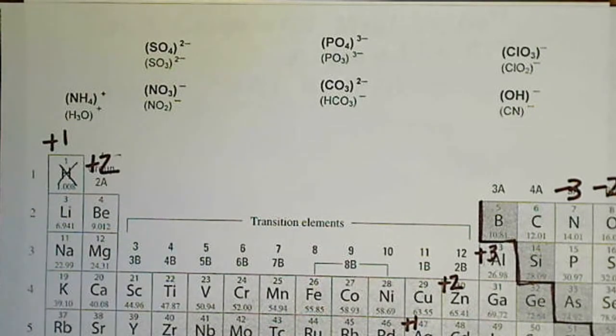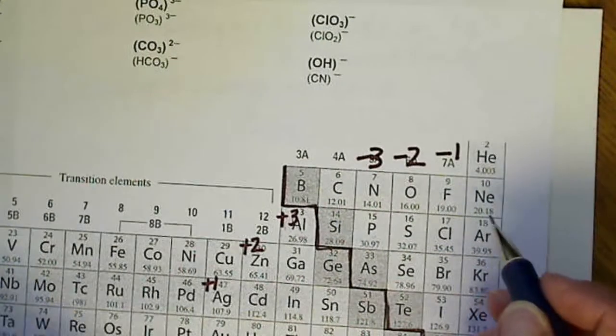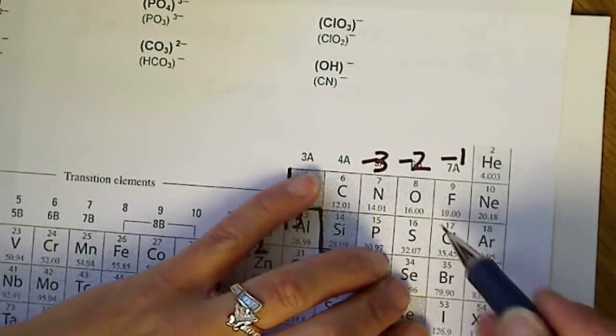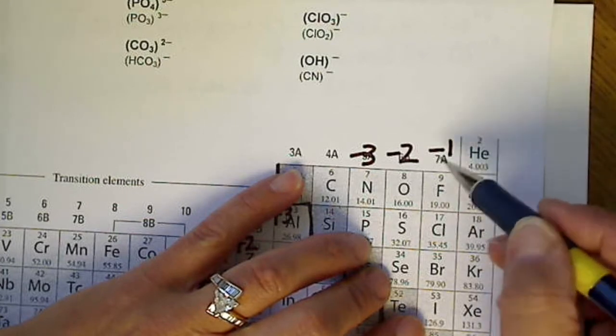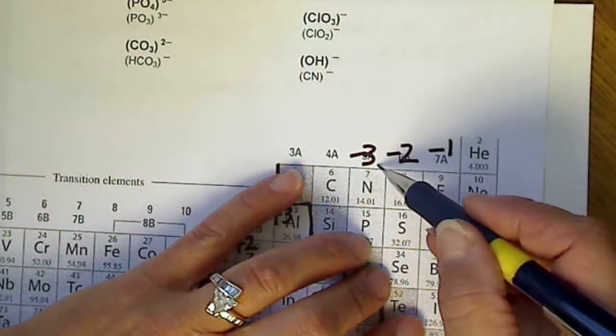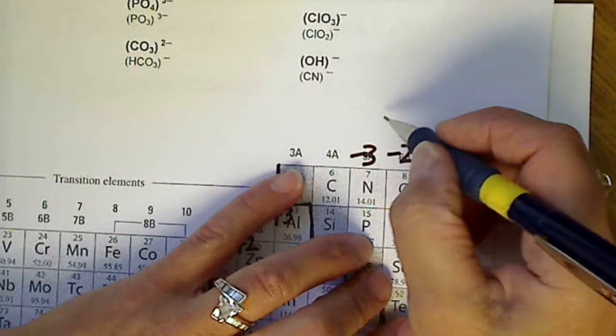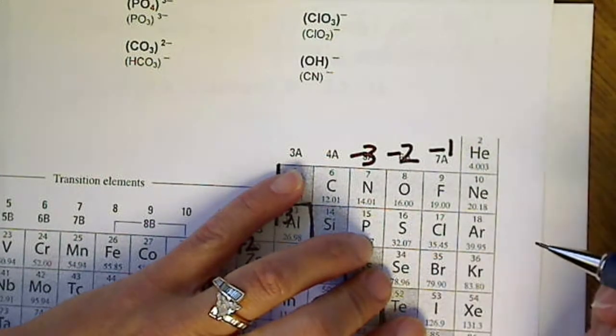We'll talk more about that later. In the non-metal column, really only goes to here, down this diagonal. Fluoride column is negative 1, the oxygen column negative 2, and negative 3. So our non-metals are going to have negative charges.